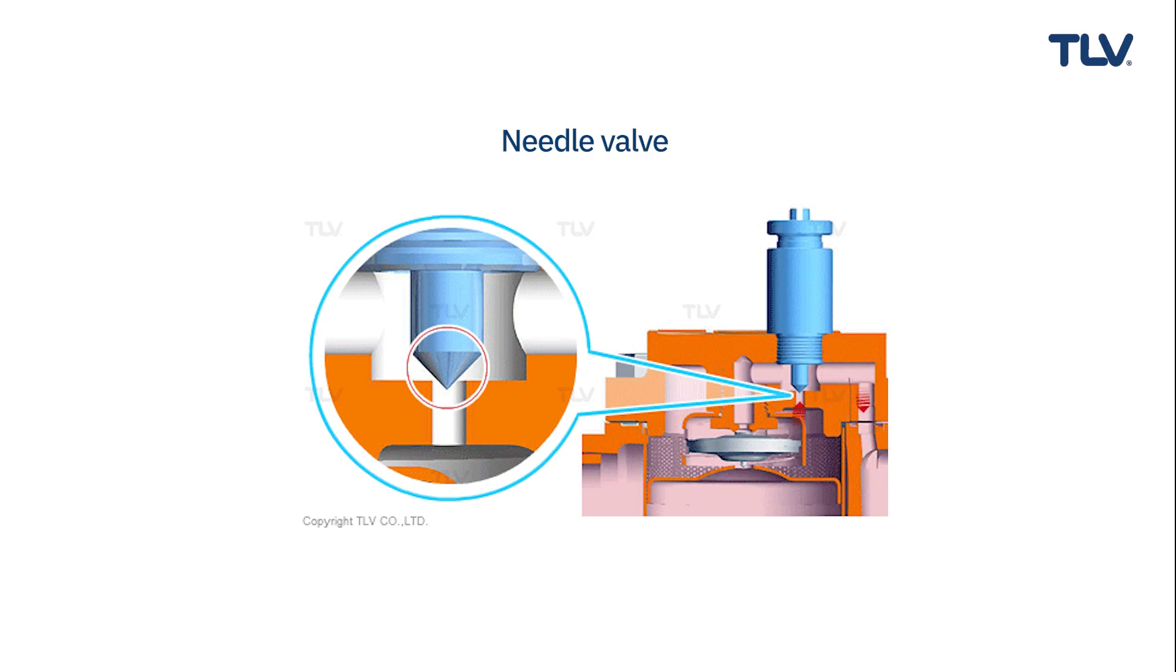A needle valve releases steam to the outlet side of the trap, either internally, if the trap has a built-in venting feature, or externally, by using a bypass line.